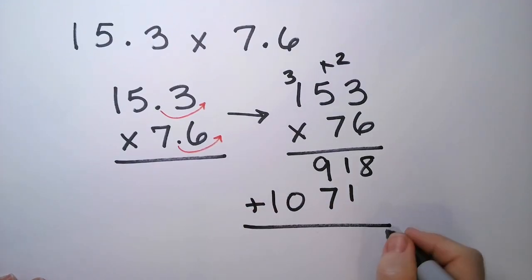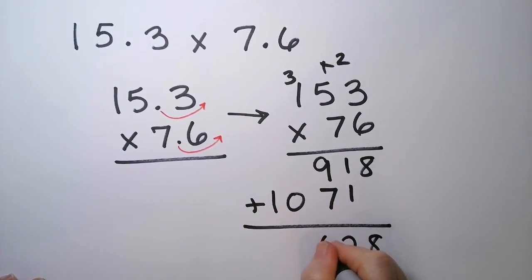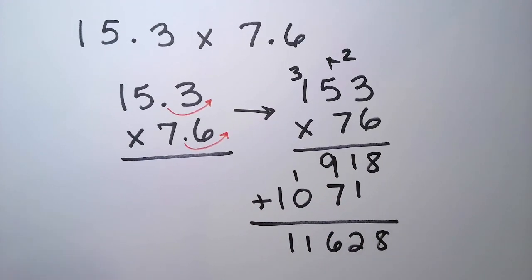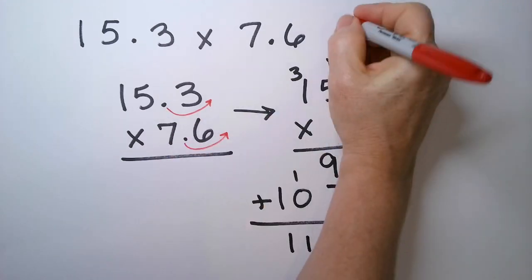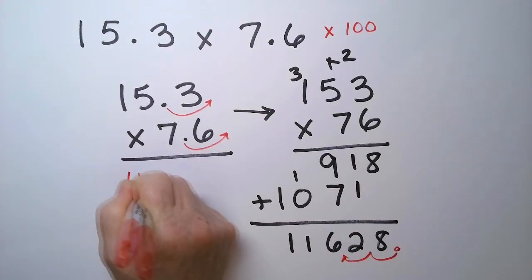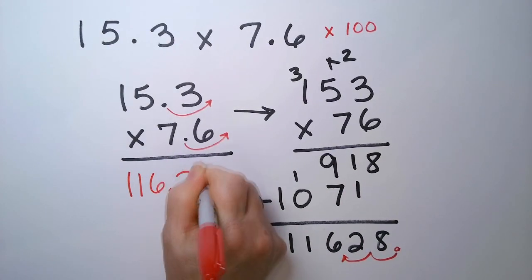We're going to add those two numbers together. I have an 8, a 2, a 6, a 1, and a 1. The question is, where does that decimal point go? So we had two hops out, which means we had multiplied this number by 100. Now we're going to divide this number by the result by 100. So that means we come in 2. So my final answer is 116.28.